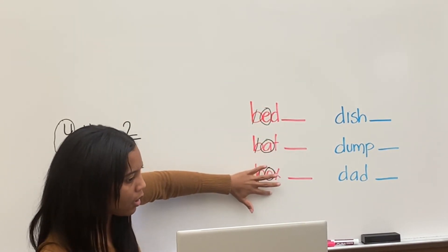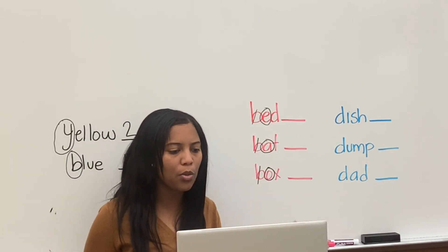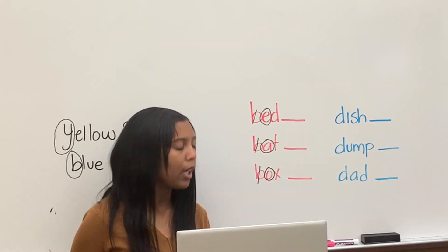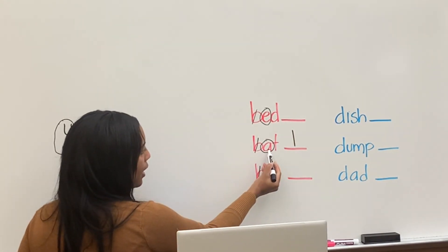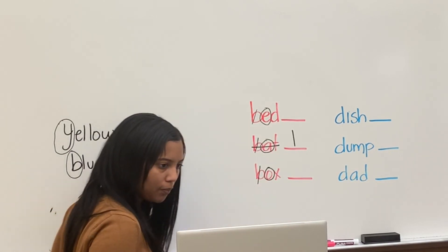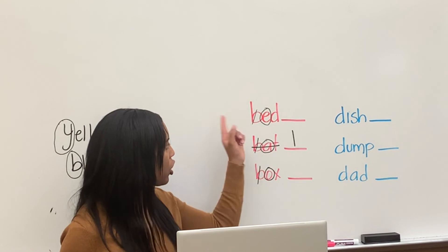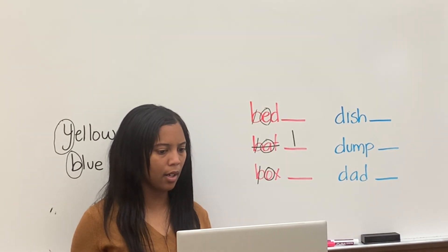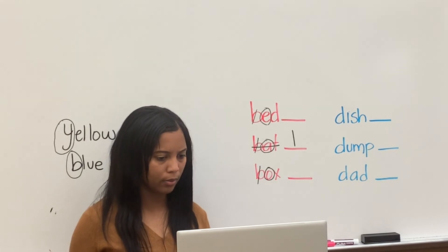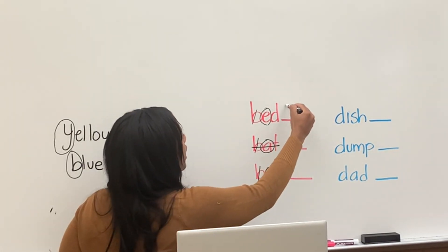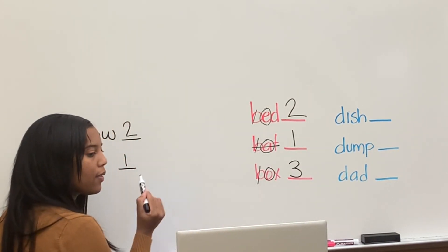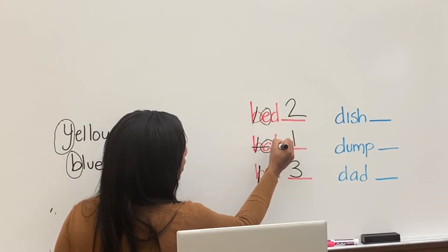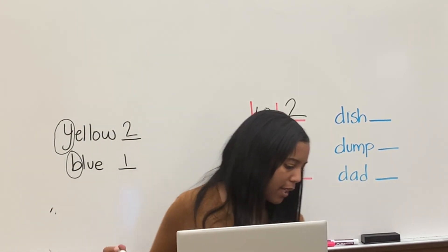So we have E, A, and O. Which out of those three letters would go first in the alphabet? Hannah? A. So 'bat' would be first because of the A. Next we have E and O — which letter comes first? Solomon? E. Good. So E would be second, then 'box' would be last. So anytime they start with the same letter, go to the second letter.